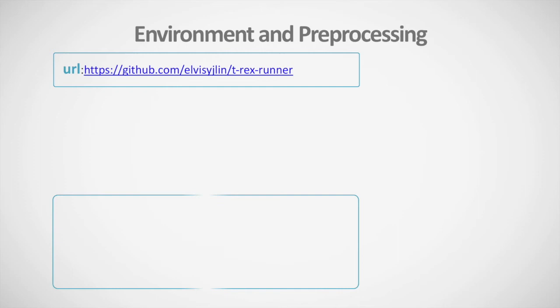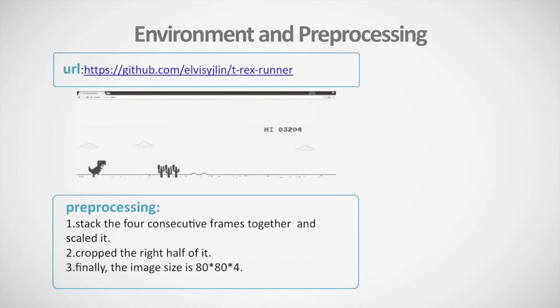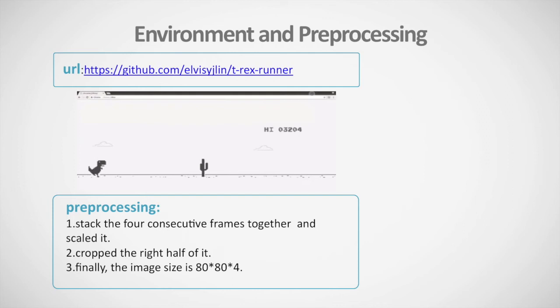For the dataset, we obtained the T-Rex Runner game from a GitHub URL — it is executed from Chrome's offline error page. Our goal is to train the agent to automatically avoid obstacles and reach the end to win. For preprocessing, we overlap four consecutive frames together and scale the image to reduce the number of parameters, then close the right half of it. The final image size is 80 by 80 by 4.